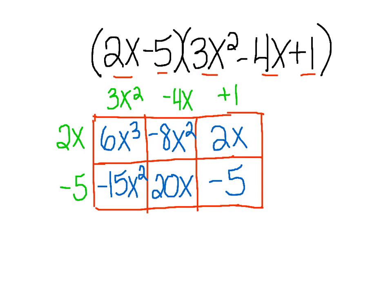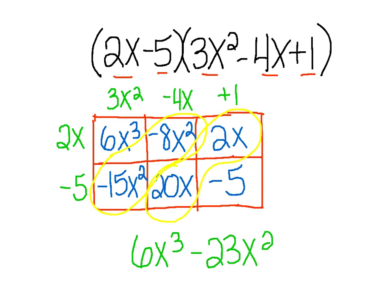The same rules apply with the box method — the diagonals line up and we combine like terms. We have negative 15x squared and negative 8x squared, and we have 20x and 2x. Combining those like terms, our final answer is 6x cubed. Negative 15 plus negative 8 is negative 23x squared. 20x plus 2x is 22x. And we have negative 5.